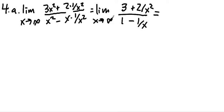And as x goes to infinity, a reciprocal of a positive power of x always goes to zero. So this goes to three plus zero over one minus zero, which is just equal to three. That's our limit.